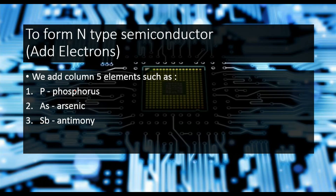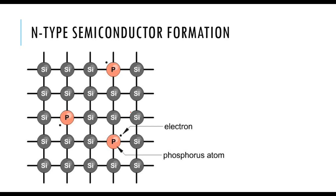N-type semiconductors are formed by the addition of column five elements into the semiconductor — for example, phosphorus, arsenic, and antimony. In the outermost shell of silicon, four electrons are present, whereas in the outermost shell of phosphorus, five electrons are present. That's why we now have one extra electron, which also affects the electronic property of the material. Doping can change the electronic property of a material drastically, so proper calculations need to be done before doing doping.